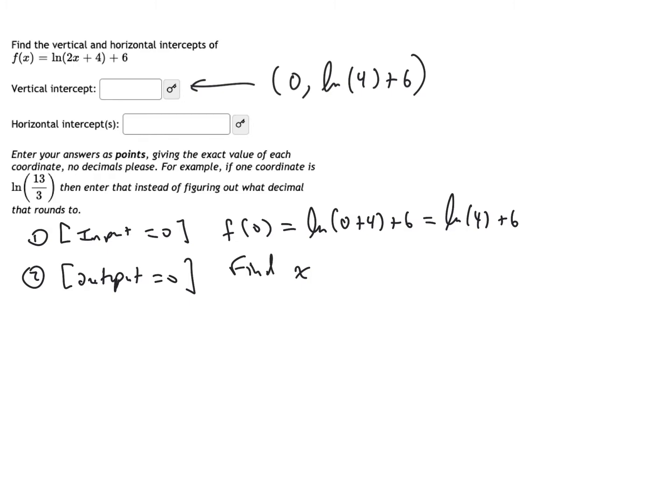I'm going to find x, so I'm going to find the input so that the output is zero, and the formula for the output is log two x plus four plus six. Find the input that makes the output zero.